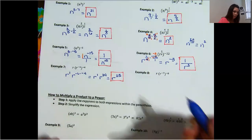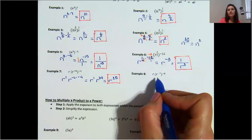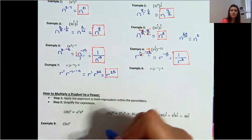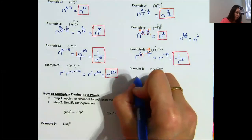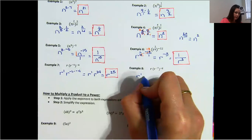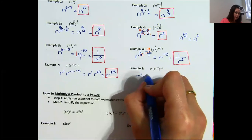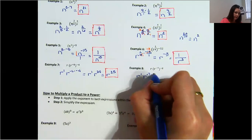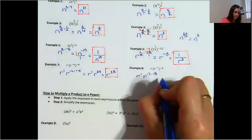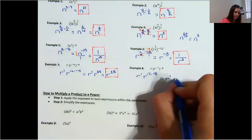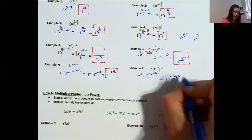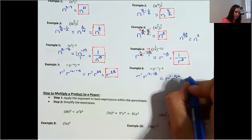Don't let that confuse you — multiplying variables with powers versus multiplying variables raised to a power that is also raised to a power is a little bit different. We're going to do the exact same thing here as just another practice problem. We have r to the first power times r to the negative 7th times negative 8. This equals r to the first times r to the power of 56, and then we add those exponents and get r to the power of 57.